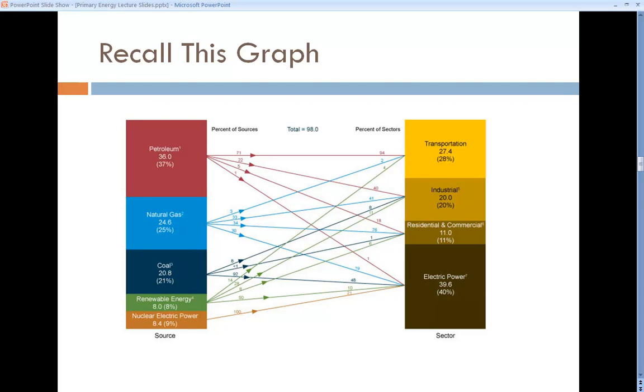It says 39.6 quads of energy was used in the electric power sector. The question I wanted to grapple with is, does that mean 39.6 quads equivalent of electricity delivered, or is that 39.6 quads of thermal energy supplied to the power plants? The answer is the latter. We deal with primary energy, which is the energy that goes to supply the system, the first source, the primary source.